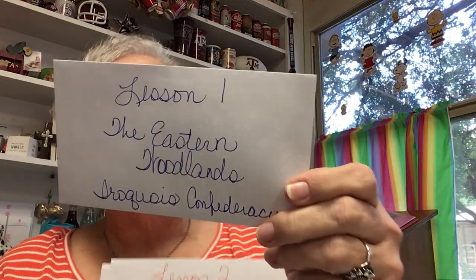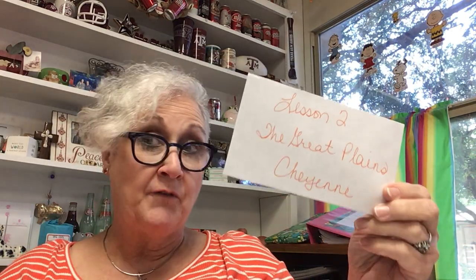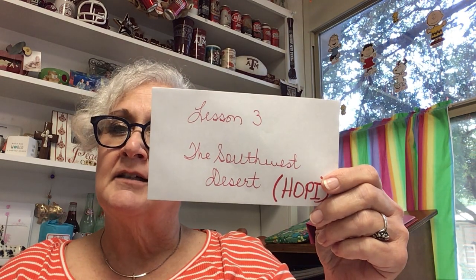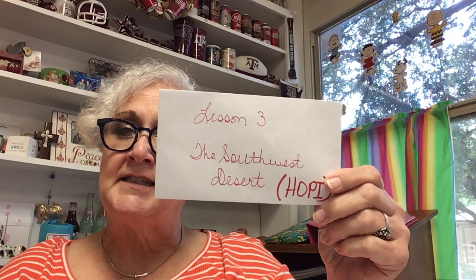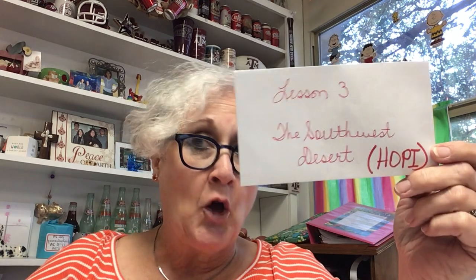This is what they look like in handwriting. Lesson one was the Eastern Woodlands — who did we study? The Iroquois Confederacy. Lesson two, the Great Plains, focused on the Cheyenne. Lesson three, which we just finished reading, is the Southwest Desert, and the tribe we studied were the Hopis.